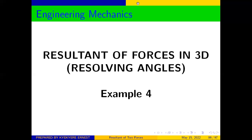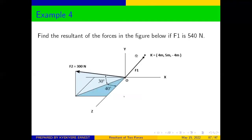Let's look at our question and how we are going to solve it. Find the resultant of the forces in the figure below if F1 is 540 newtons. We have been given this diagram here. We have two forces, F1 and F2, and we are asked to find the resultant.